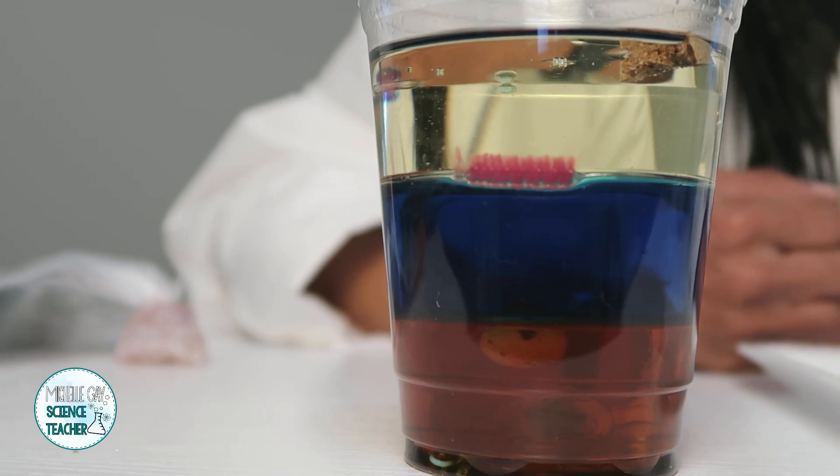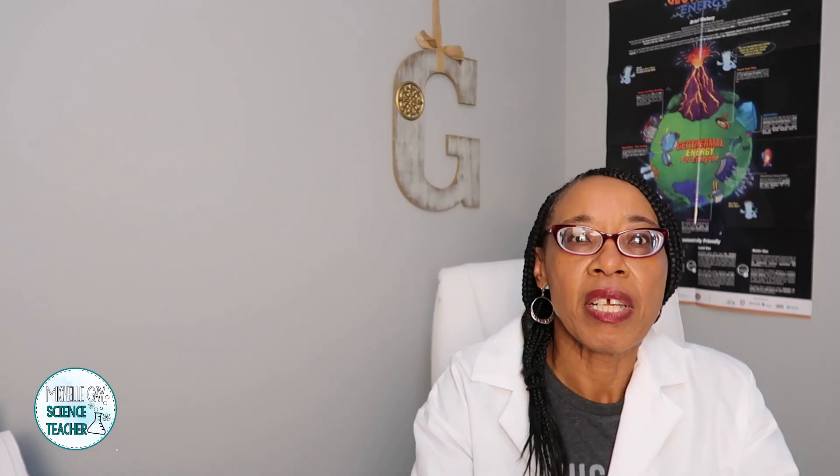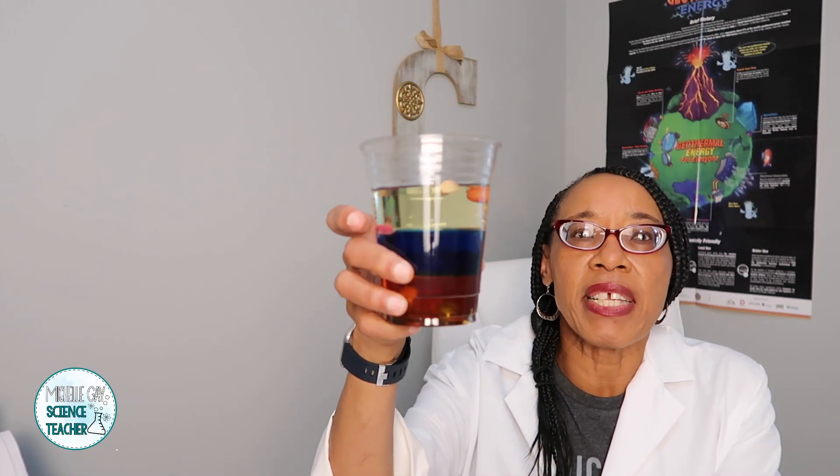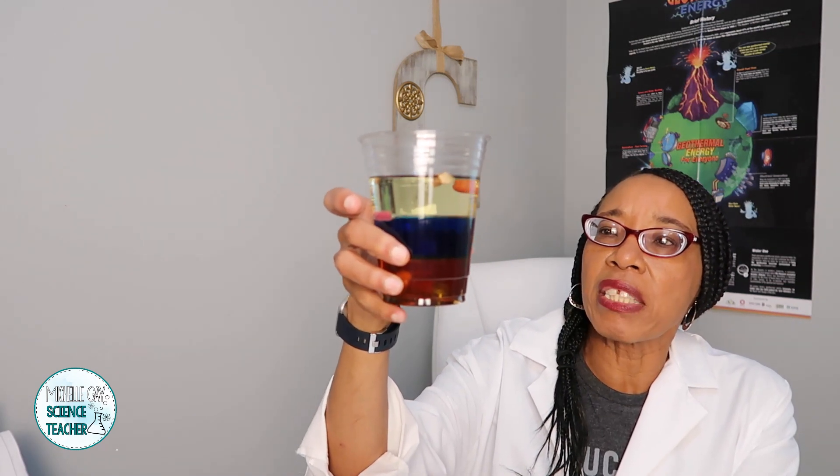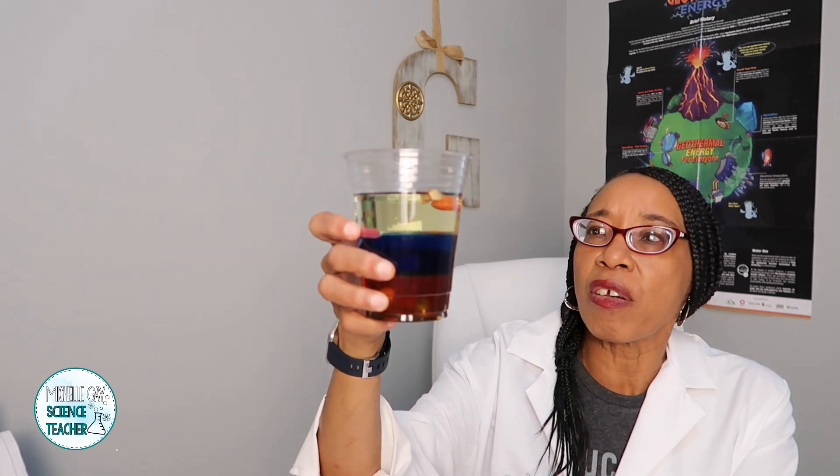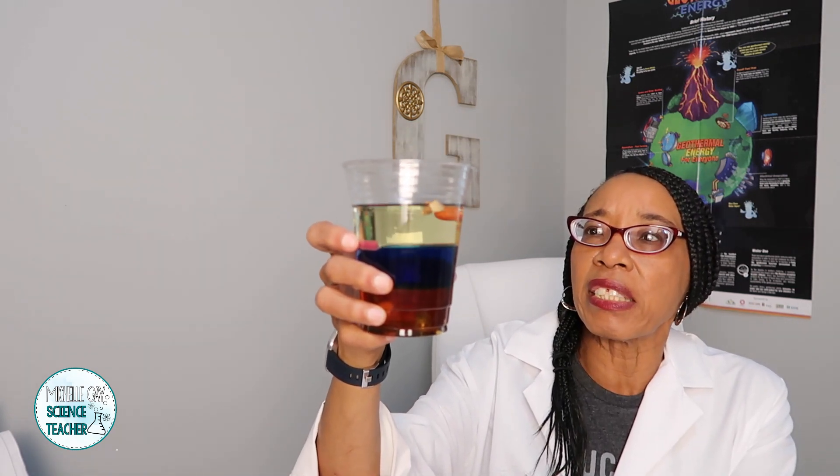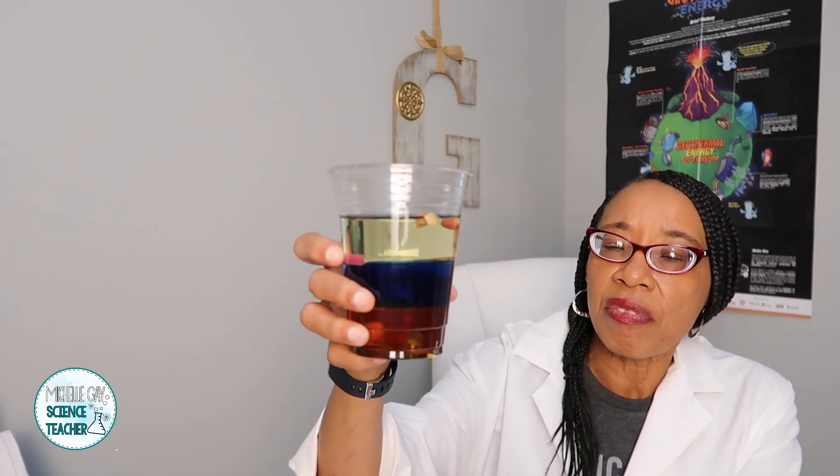Are there any objects that have a lesser density than oil? So if you were to rank these in order from least density to greatest density, which objects would you put in that order? So let's look at the least density. We have our bead and our cork.